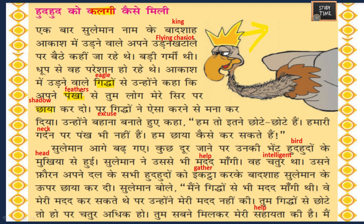Sulayman aage but gaya - Sulayman went ahead. After going some distance he met the head of Hudhud. Sulayman asked him for help. The Hudhud was chatur - meaning intelligent. He immediately gathered all the Hudhud birds from his group and gave shadow to King Sulayman.